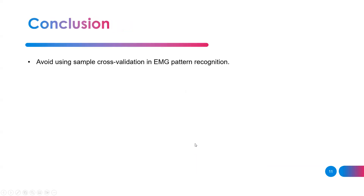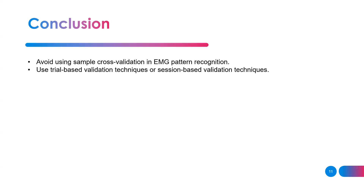In conclusion: avoid using sample-based cross-validation in EMG pattern recognition. Whether using publicly available datasets or data you collect yourself, you typically collect a few trials of every movement — just allocate some trials for training and some for testing, or implement a leave-one-trial-out approach. You can also use session-based validation: collect one session of trials, then another session for testing. Use trial-based or session-based validation techniques to avoid falling into the data leakage problem. That is all for today — thank you very much.